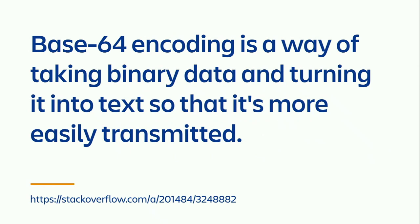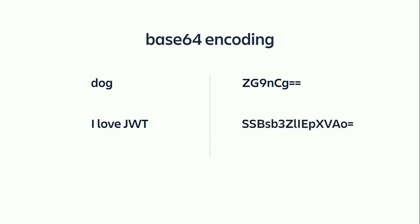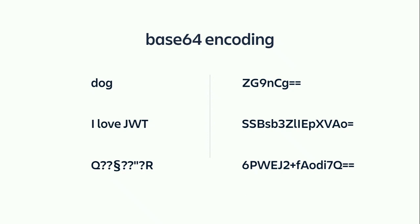But first, we need to talk about Base64 encoding. Base64 encoding is a way of taking binary data and turning it into text so that it's more easily transmitted. For example, 'dog' will become a certain encoded string, 'I love JWT' will become another. Most importantly, random binary data — which could contain null characters or things interpreted as control codes — will still become a standard set of 64 characters and is easily transmittable with no problem.